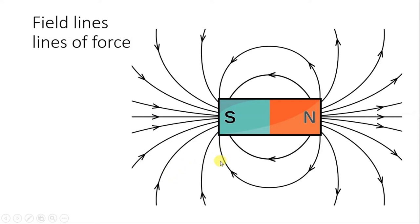You may have seen this kind of 2D diagrams in all the textbooks or reference material. The direction of magnetic field outside the magnet is going from north to south, and inside, the lines are going from south to north.